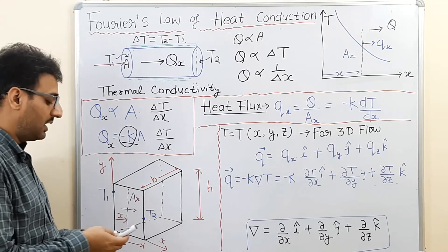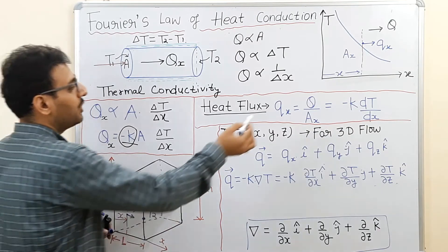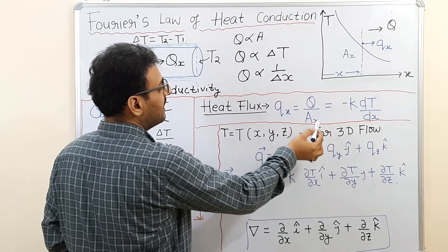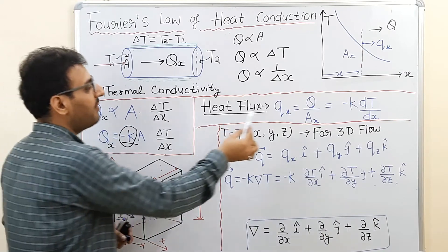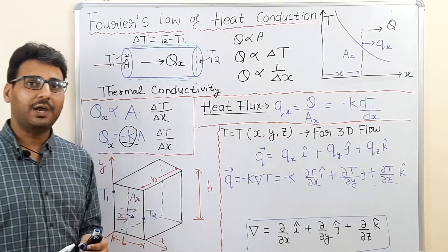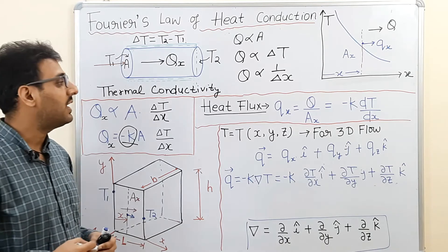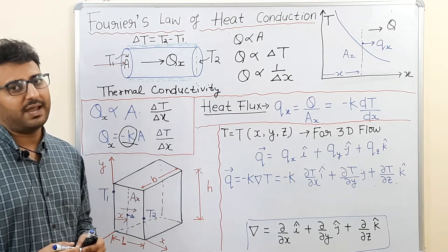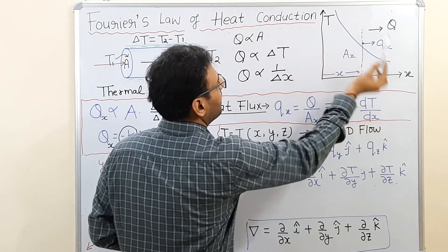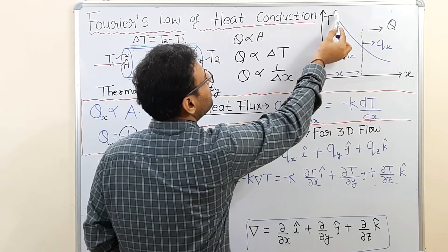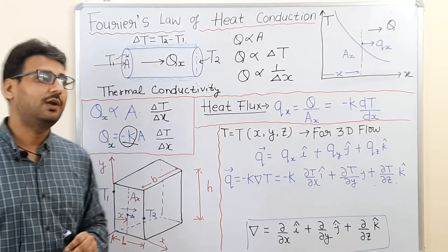If we want to find the heat flow rate at a point, we divide q by the cross-sectional area A_x. The resulting quantity is known as heat flux — heat flow rate per unit area, or heat flow rate at a point in the material. This quantity is analogous to stress in engineering mechanics. Plotting a graph of temperature T versus distance x shows that temperature decreases in the direction of heat flow, confirming a negative temperature gradient along the heat flow direction.